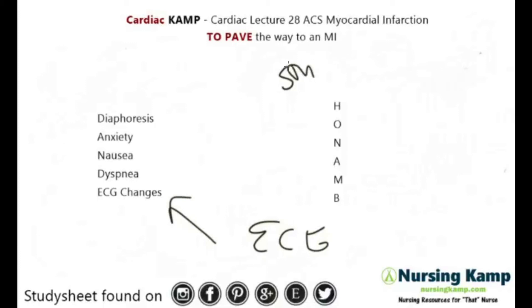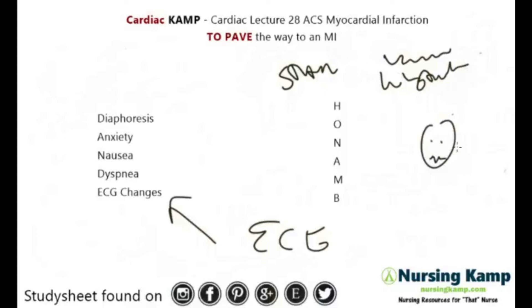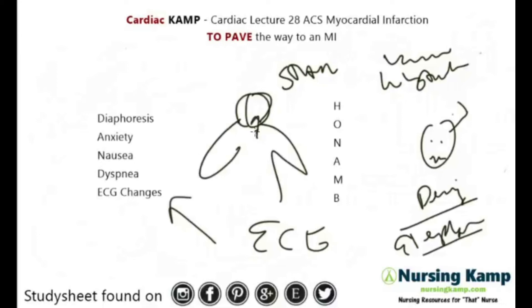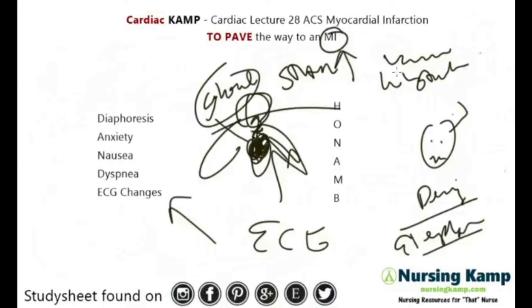Stable angina, variant angina, and even unstable angina patients often just present with chest pain. A lot of times they don't think they're having an MI — they're having an MI and they deny it. They often describe it like an elephant on their chest: real chest pressure, squeezing pain, tightness, radiating to the jaw and the left arm. It can also be substernal pain or referred pain in the shoulder. Take chest pain very seriously, especially if you're suspecting an MI. Assess the pain using PQRST.